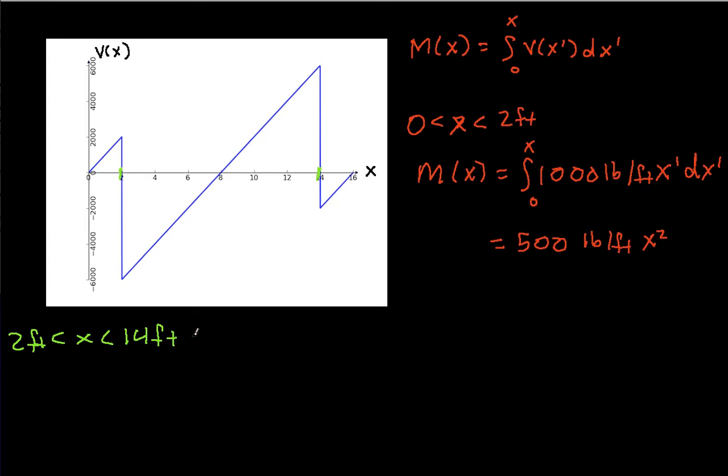So for this situation, we have m of x will be equal to m of 2 plus the integral from 2 feet to x of v of x prime dx prime.